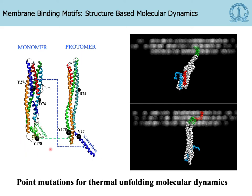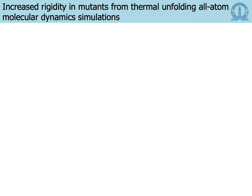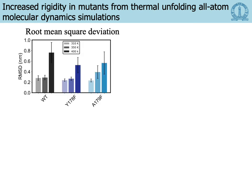The key takeaway is that the membrane is sampled by the beta tongue and the N-terminus. We mutate regions in the beta tongue and the N-terminus and carry out thermal unfolding molecular dynamics simulations. In all-atom simulations of the monomer in solvent, we heat these up to 310 K, 350 K, and 400 K and look at the root mean squared deviation to assess overall protein stability. For the wild type with no mutations, at around 400 K we start to see higher RMSD indicating the protein is being destabilized. However, in some of the mutants, this level of destabilization is far less.